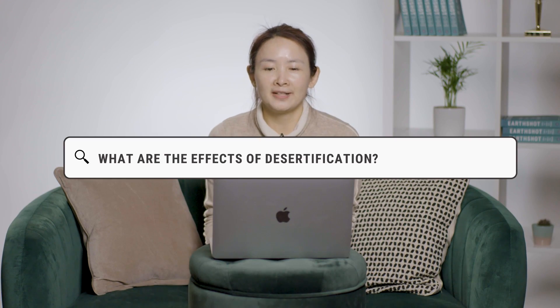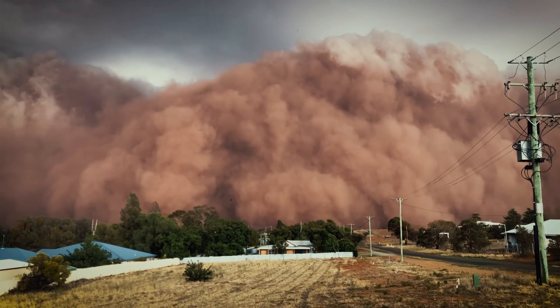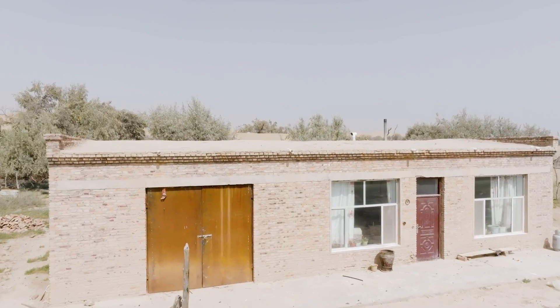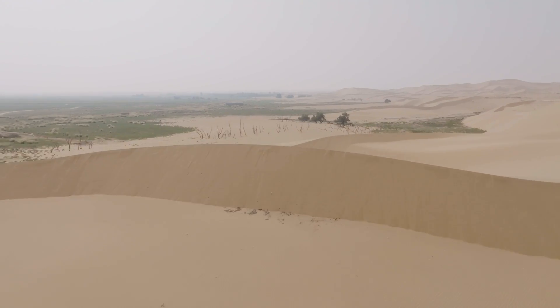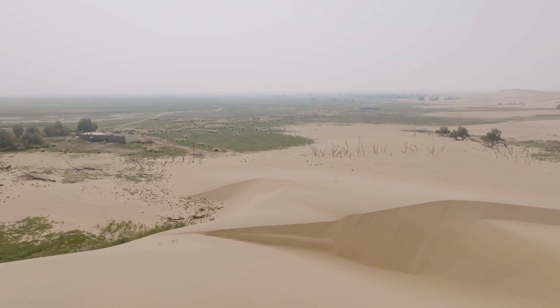How does desertification affect people? We have been to different places in the world affected by desertification. You see people there are affected by sandstorms, their houses are occupied by sand so they have to move to new places. The arable land is covered by desertified sand, so they cannot grow crops and the environment is very bad.